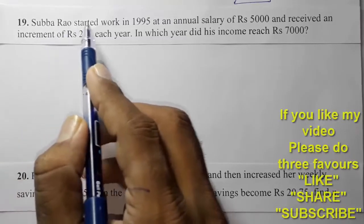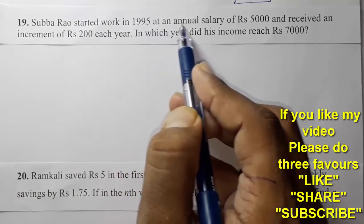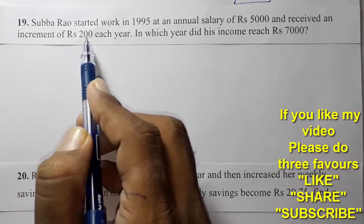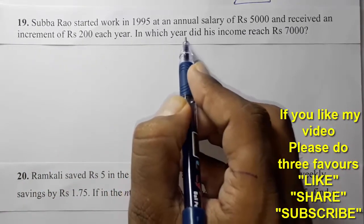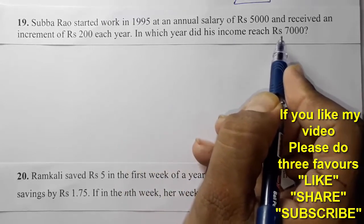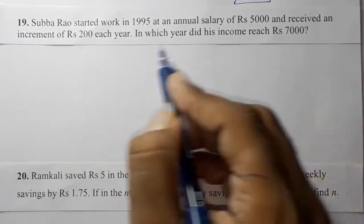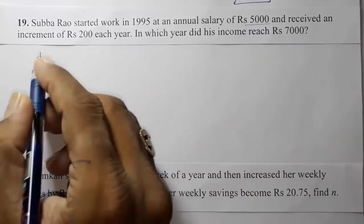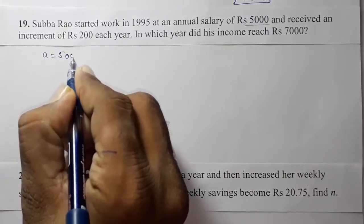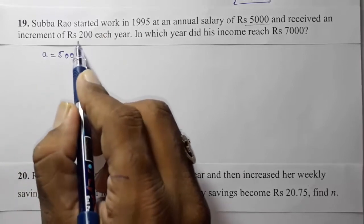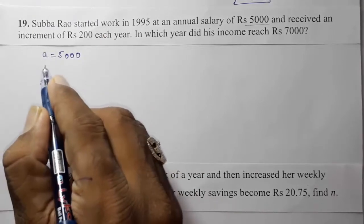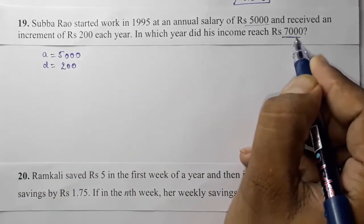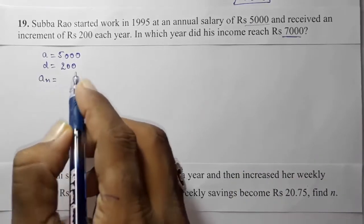Moving to Question 19: Subha Rao started work in 1995 at an annual salary of ₹5000 and received an increment of ₹200 each year. In which year did his income reach ₹7000? Here, the first term a = 5000 (salary in the first year), the common difference d = 200 (annual increment), and the nth term an = 7000 (the target salary).